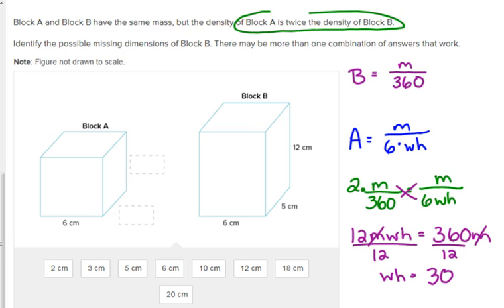So, that means our width times our height has to be 30. It says there may be more than one combination of answers that work. So, out of our choices there, what can we use for the width and the height to give us 30? 5 and 6, is there another choice? 3 and 10. And you can put those in either block just as long as you have the 5 and 6 paired together and the 3 and the 10 paired together. That's why I did them in different colors.